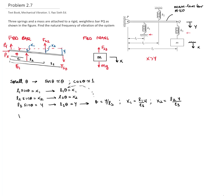Now let's do the forces. The force of spring 1 equals k1 times its deflection x1, which is k1·(L1/L3)·y. The force of spring 2 is k2·x2 = k2·(L2/L3)·y. And finally, the force of spring 3 equals k3 times the difference between the two ends of the spring, which is x minus y.